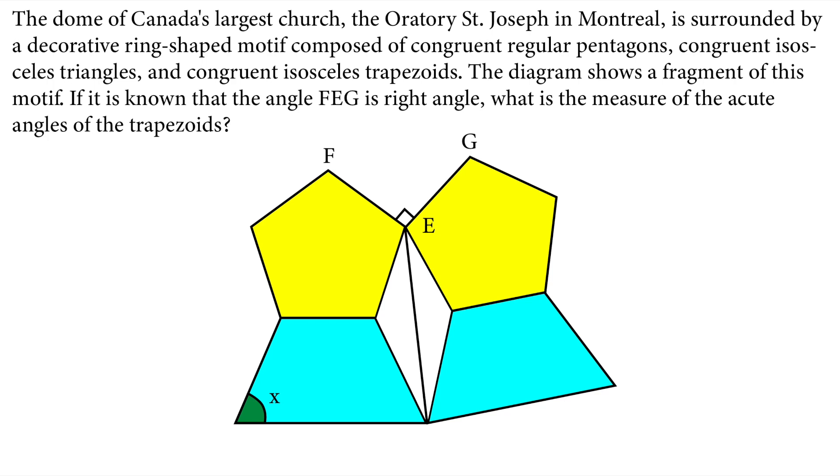If it is known that the angle FEG is a right angle, what is the measure of the acute angles of the trapezoids?